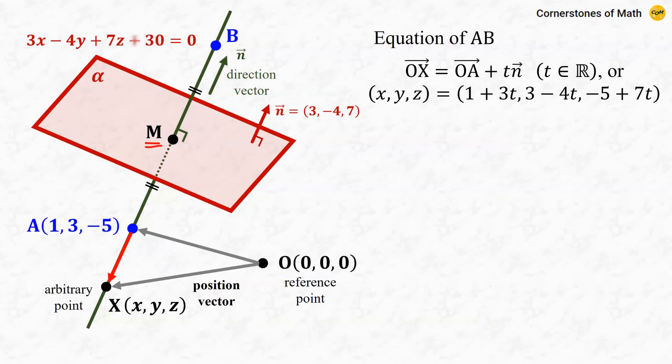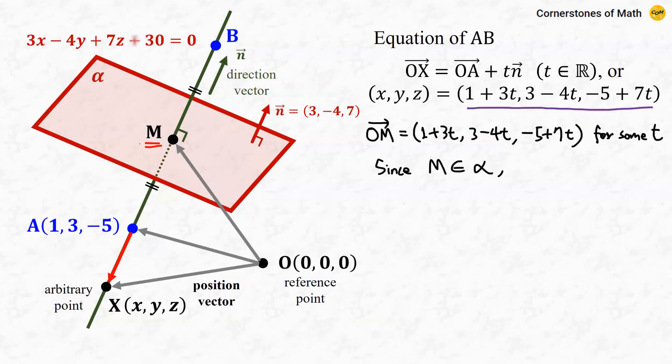Now this midpoint M, or the position vector OM, is also expressed in this form. Moreover, since this point M also must be on plane alpha, it also satisfies the equation of a plane. So we have 3 times (1 + 3t) minus 4 times (3 - 4t) plus 7 times (-5 + 7t) + 30 = 0.